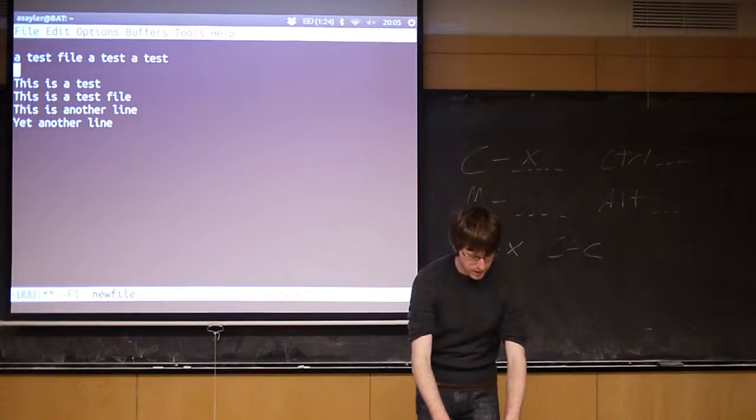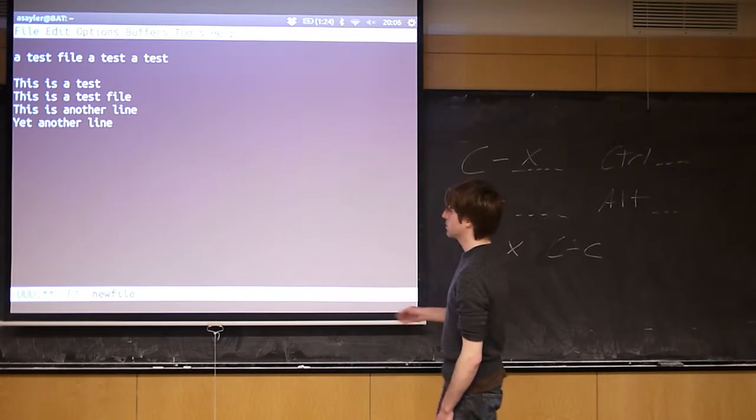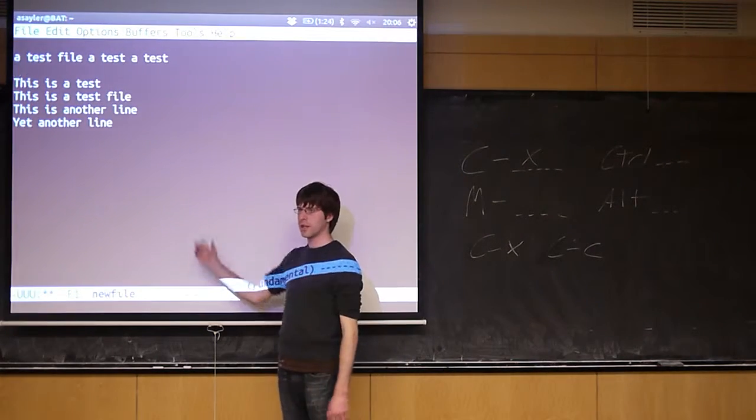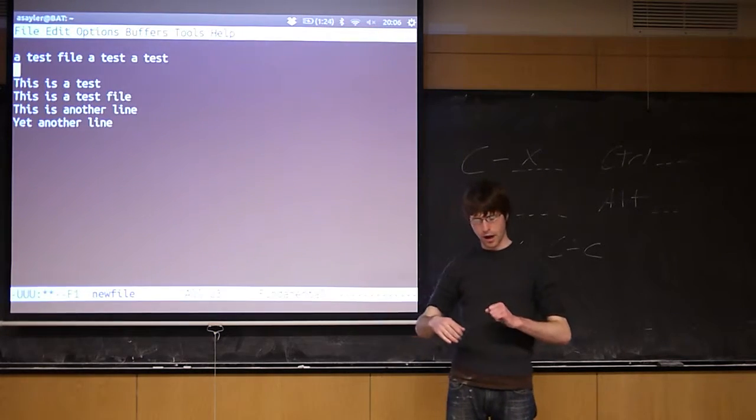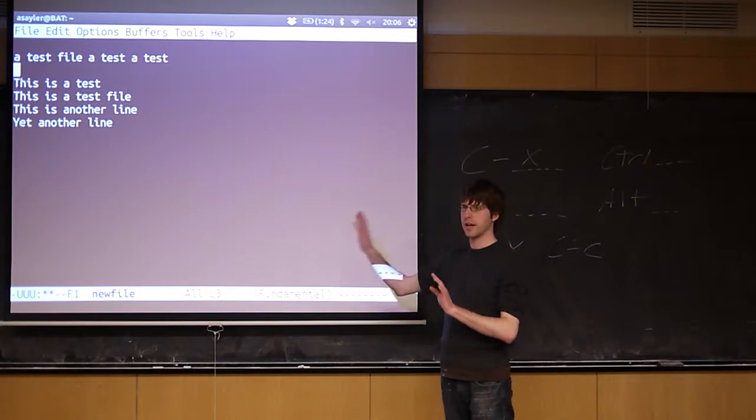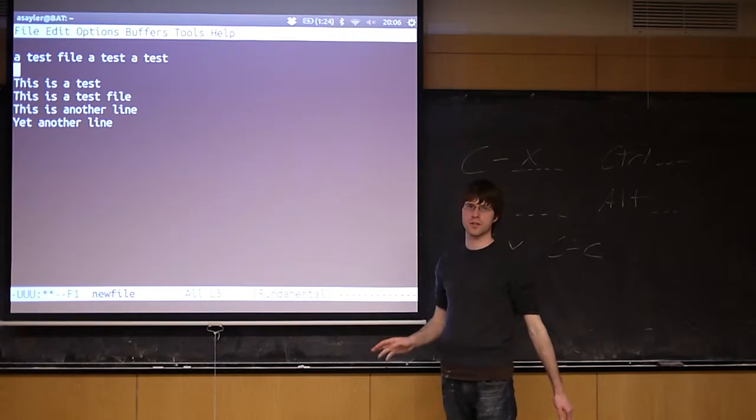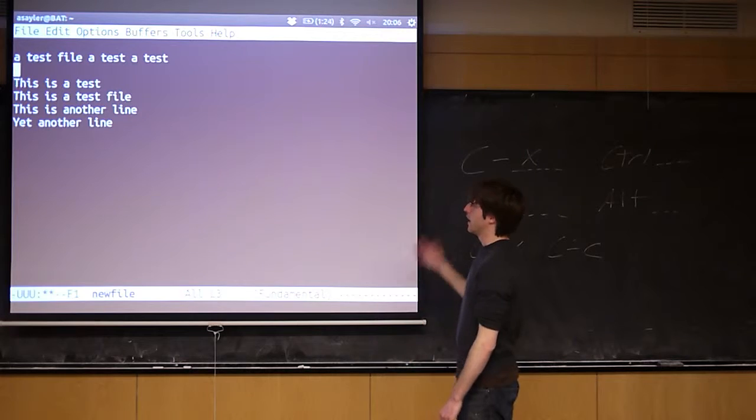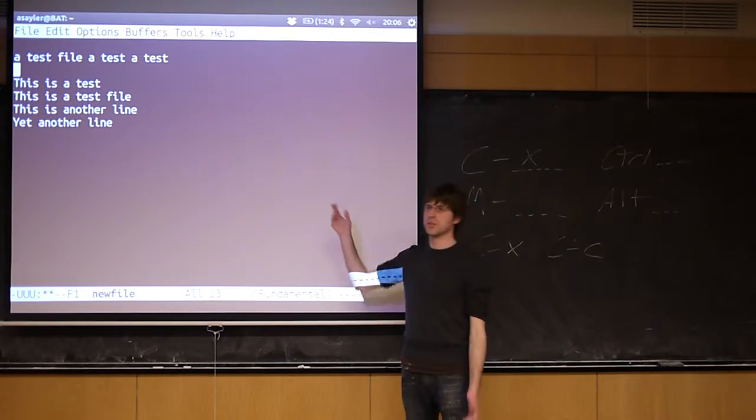So the standard command to split a window, there's two separate commands. One splits the window vertically, the other splits the window horizontally. I like to split my windows vertically, so I have a left-hand side and a right-hand side. I normally just have two things open at once, so it gets busy when I have more than that. Some people like to do it horizontally.